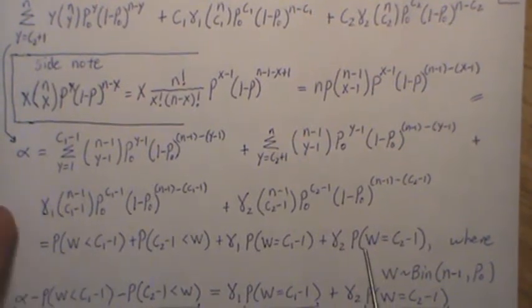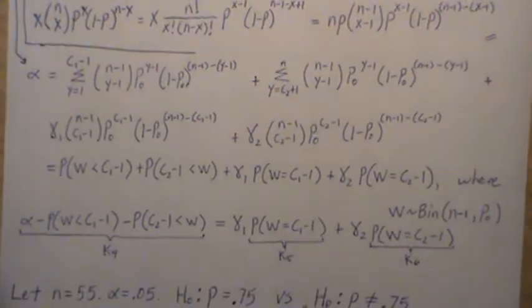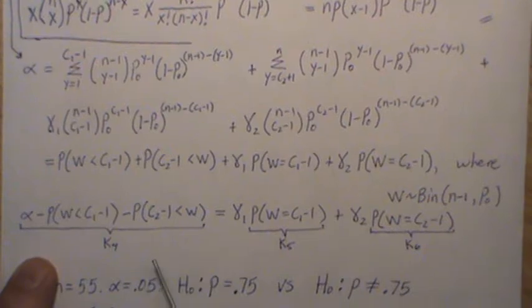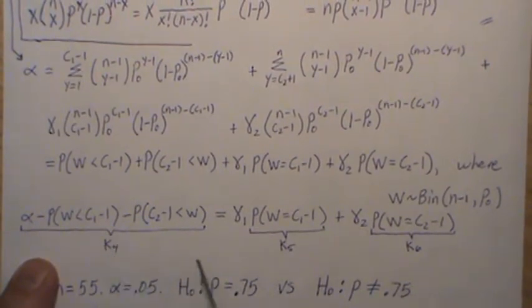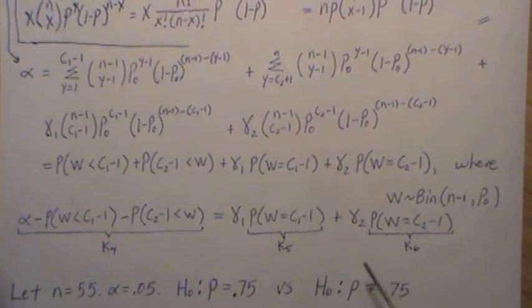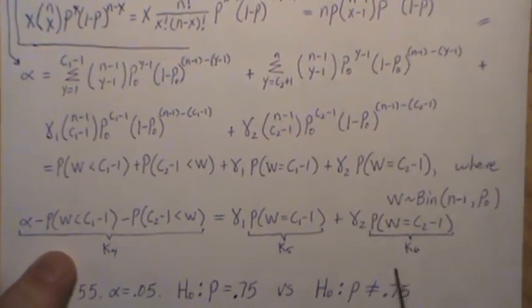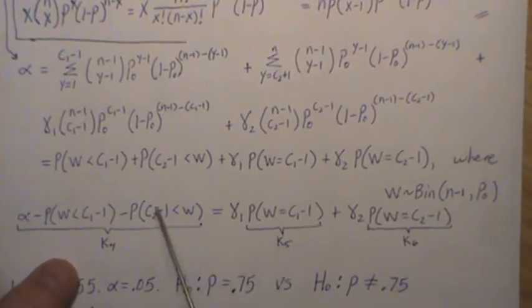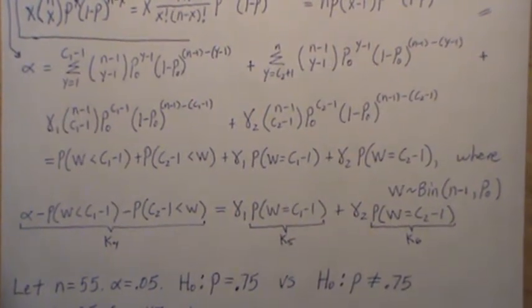This right here ends up being this probability where w is that binomial distribution. Then this piece here, when you re-index it with w equal y minus one, becomes this, the probability that w is greater than that. This is gamma one times this probability, gamma two times this probability, where w is again this binomial. So this is the equation. Since it equals alpha, let's subtract these to the other side and we get this equation. In the R program that I use in the next video, we're going to call this K4, K5, K6.